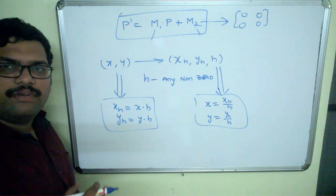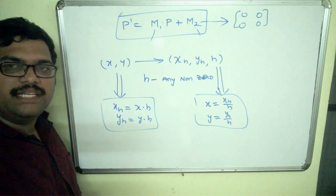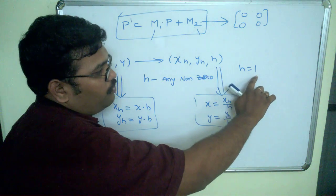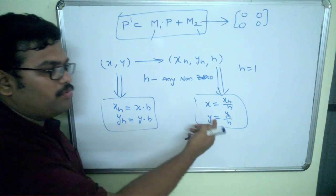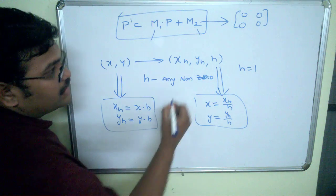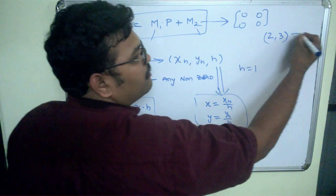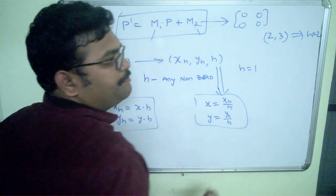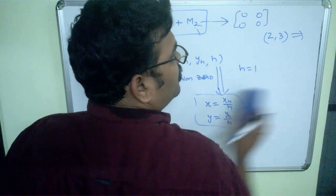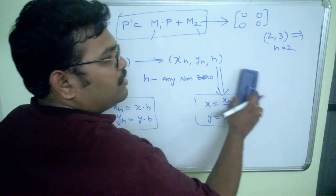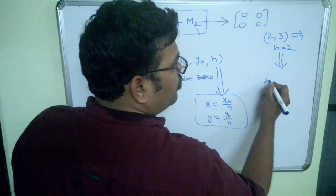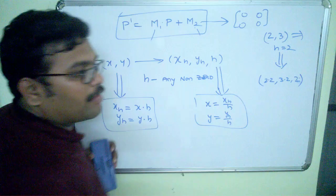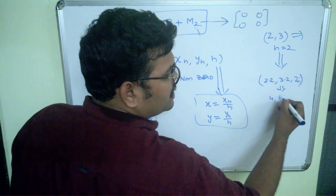For simple calculations, h can be considered as 1. For example, let us consider the coordinate (2, 3). If h equals 2, the new coordinates will be 2×2, 3×2, h — that is 2 — giving the homogeneous coordinate (4, 6, 2).